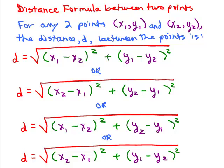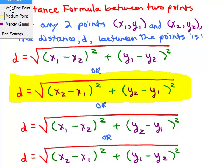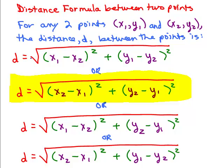For any two points — x1, y1 and x2, y2 — the distance between the two points can be written any of these ways. The one you usually see in a book is this one right here. Any of these give you exactly the same answer. The main idea is a big square root sign with parentheses containing the difference of the two x's squared, plus another parenthesis with the difference of the two y's squared. The order doesn't matter.